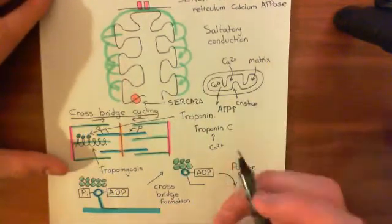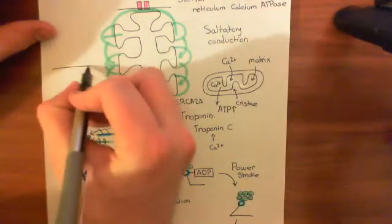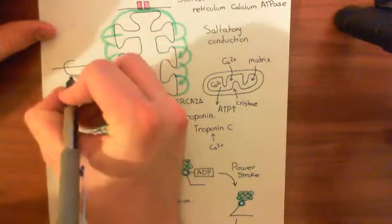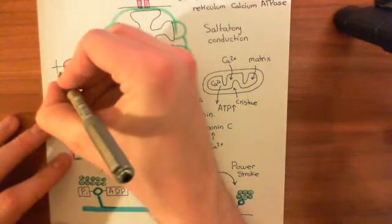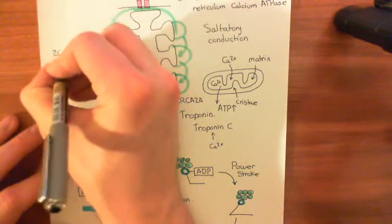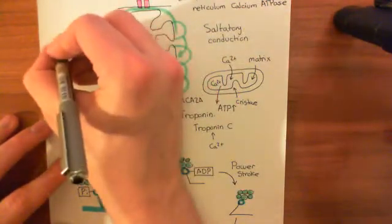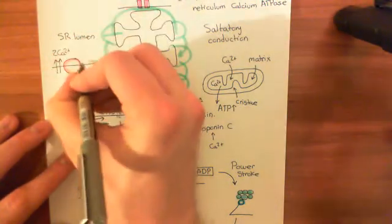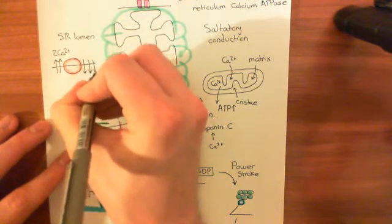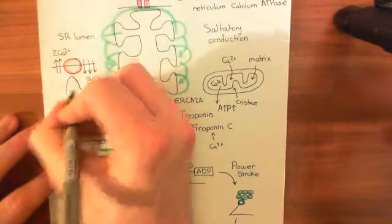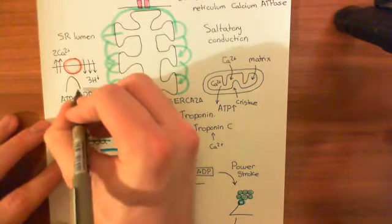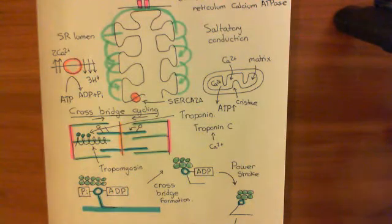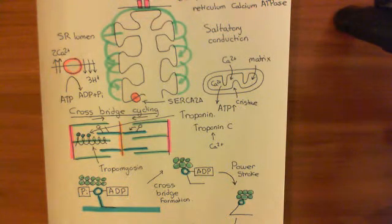What SERCA does is it moves two calcium ions back into the SR lumen — the sarcoplasmic reticulum lumen — and in exchange for those two calciums, it moves three protons out. It also has to hydrolyze ATP in order to do this, so ATP is hydrolyzed to ADP and inorganic phosphate. To summarize: when the action potential goes, the release of calcium from the SR stops, and SERCA-2A starts pumping calcium back into the sarcoplasmic reticulum.